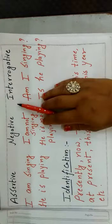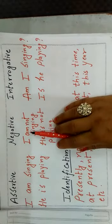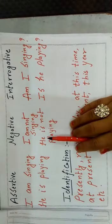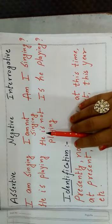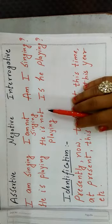To make negative sentence, we simply add not between the be form of the verb and the main verb. Similarly, I am not singing. He is not playing.